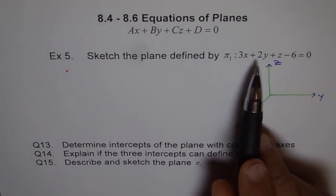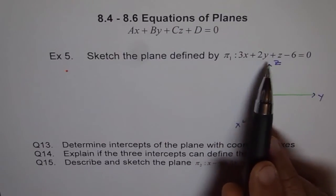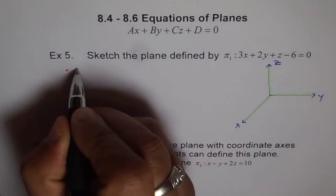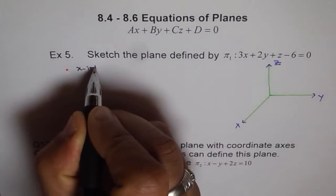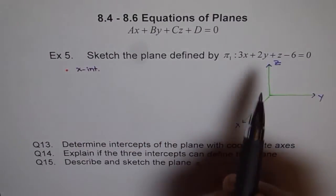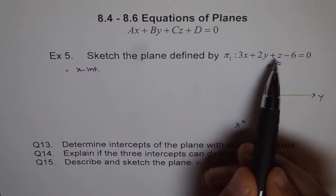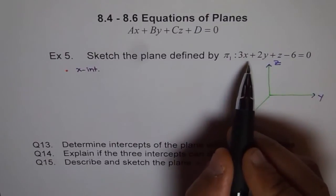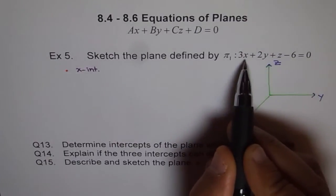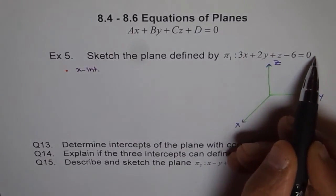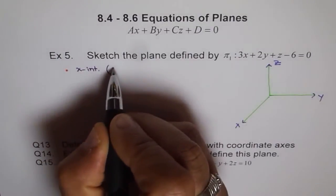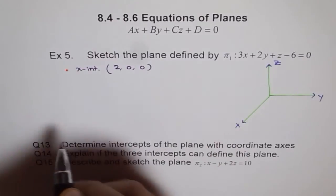Here, what we will follow is to find intercepts. So, let's find x-intercept. What is the x-intercept here? x-intercept for me will be, I can put y and z equals to 0 and then find the value of x. So, if I put y, z equals to 0, I get x equals to 6 over 3, which is 2. So, I can write this x-intercept as 2, 0, and 0.